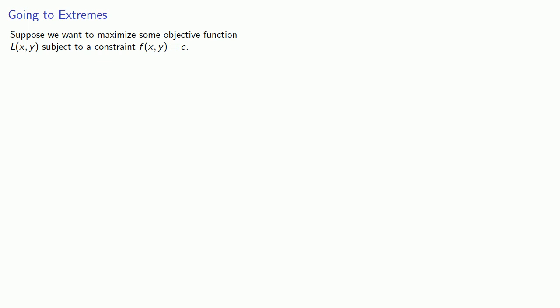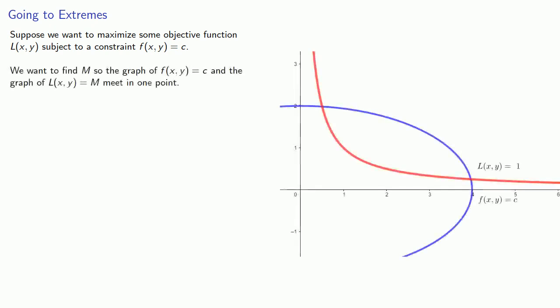Suppose we want to maximize some objective function L subject to a constraint f of xy equals c. We want to find some constant m so the graph of f of xy equals c and the graph of L of xy equals m meet in one point.